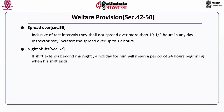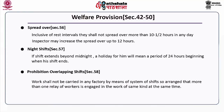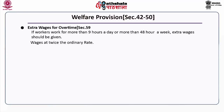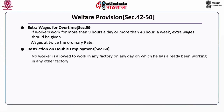Night shifts: if a shift extends beyond midnight, a holiday for the worker will mean a period of 24 hours beginning when his shift ends. Prohibition of overlapping shifts under Section 58: work shall not be carried on by a system of shifts so arranged that more than one relief worker is engaged in work of the same kind at the same time. Extra wages for overtime: if workers work for more than 9 hours a day or more than 48 hours a week, extra wages should be given at twice the ordinary rate. Under Section 60, restriction on double employment: no worker is allowed to work in any factory on any day on which he has already been working in any other factory.